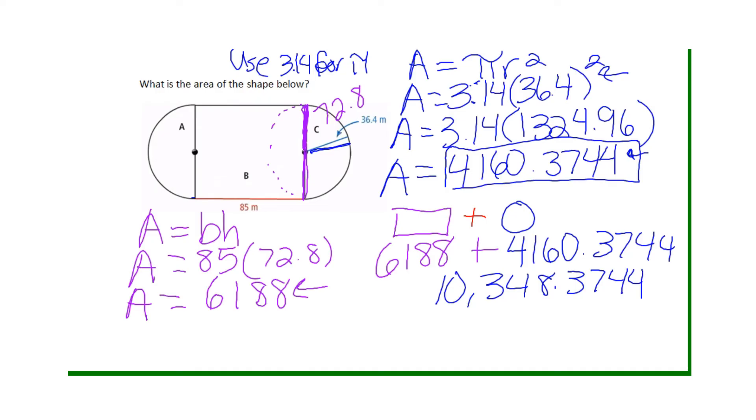Now if the question said round to the nearest whole meter, then I will go ahead and round it to 10,348. And this is in meters squared. Remember area is squared. So the area for the complete shape is 10,348 meters squared, and that is when I round it.